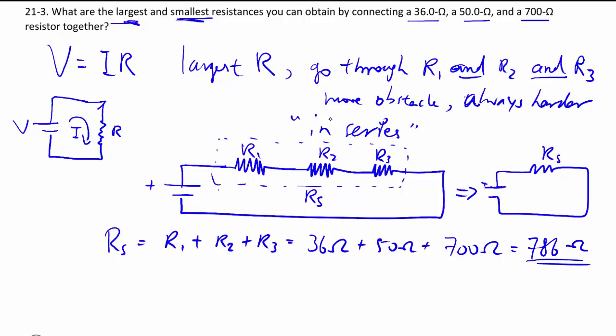So that's how we get the largest R, is to connect everything in a line in series so it goes through R1 and R2 and R3.